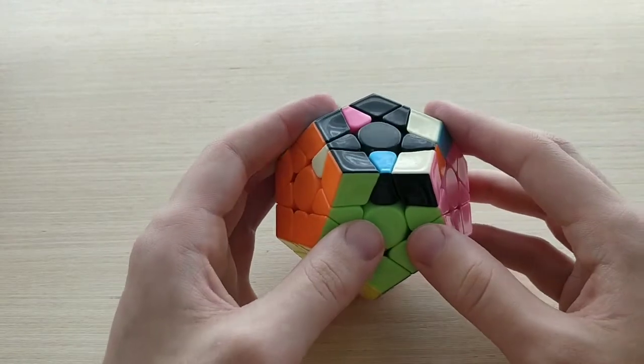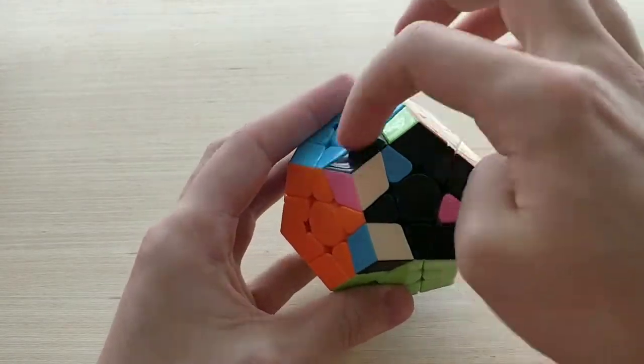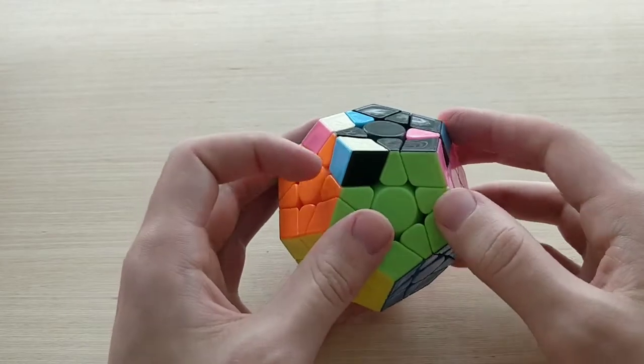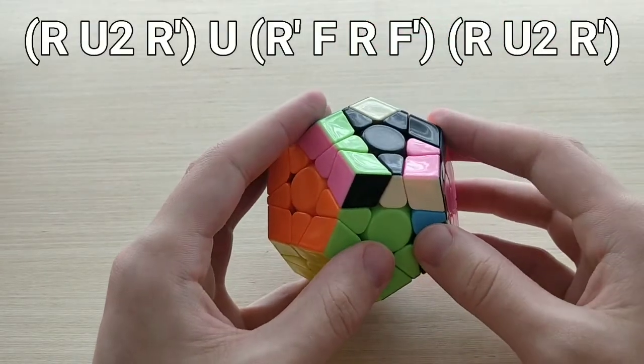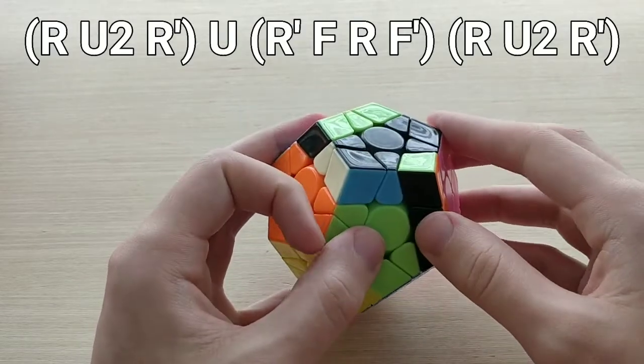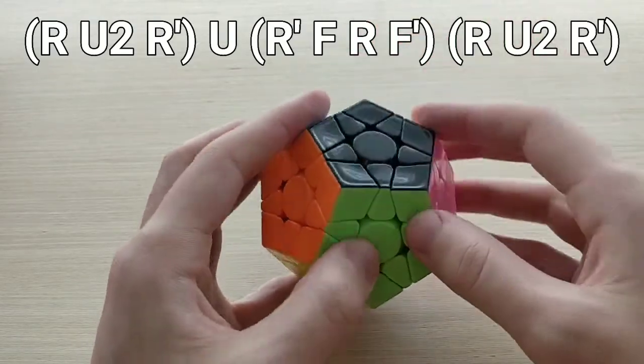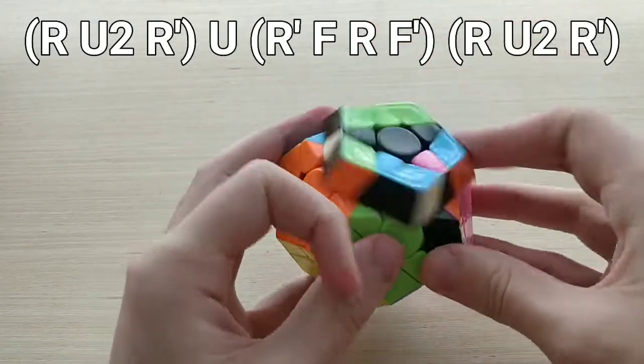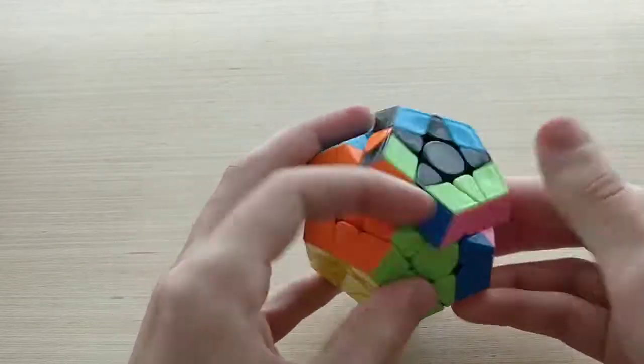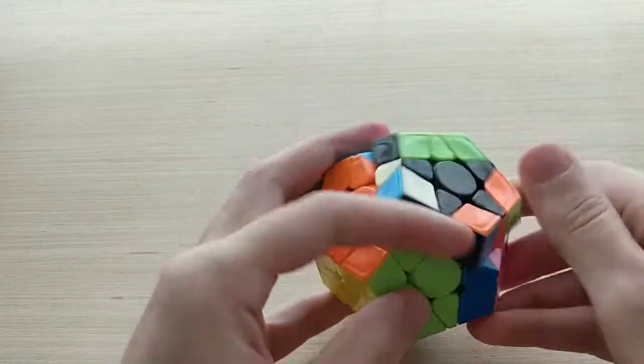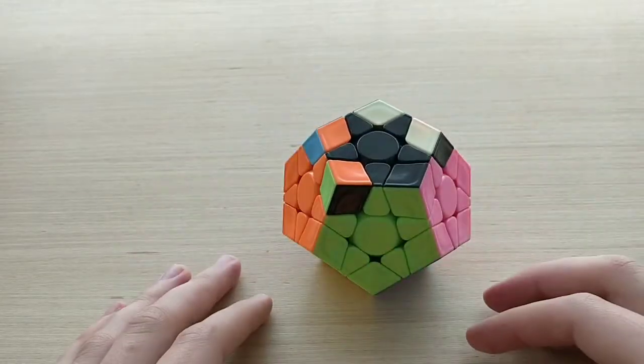And then finally we have 10B minus, which we're going to do from this angle, so block in the back left, and this one looks like this. R U2 R', U2 with our left index, then U sledge U2 R' with our left index again. Just pretty basic RUF stuff.